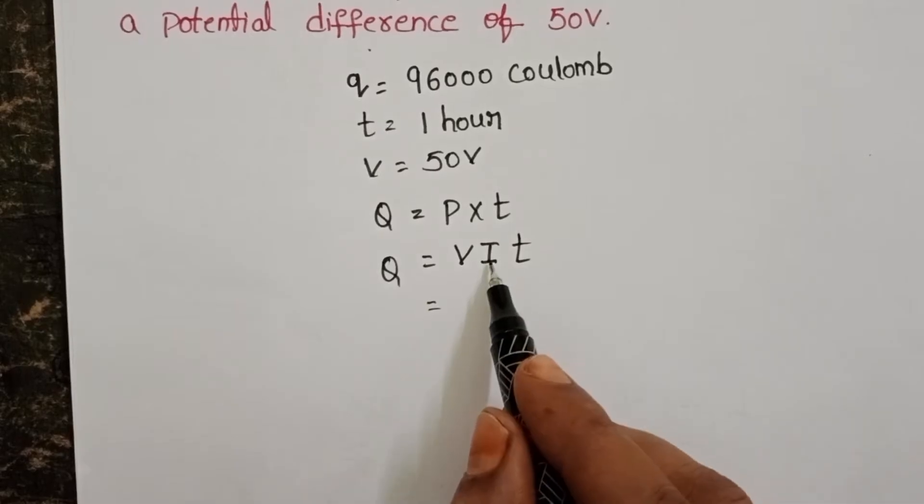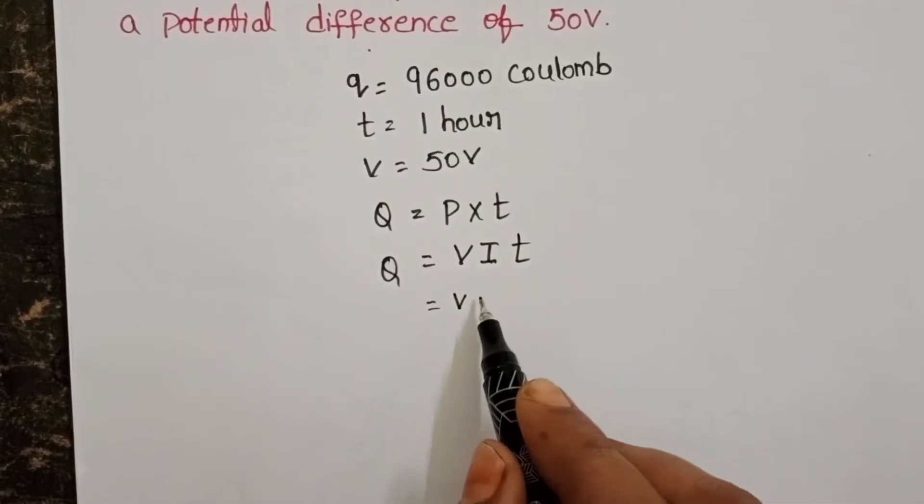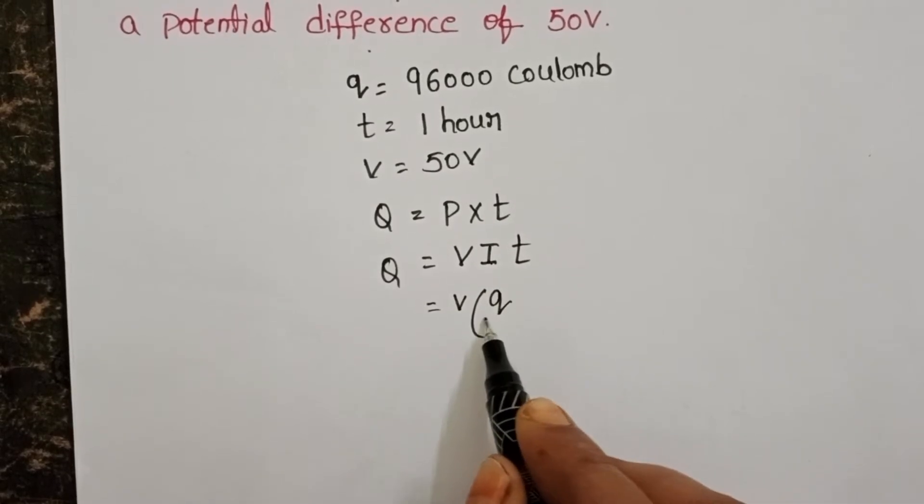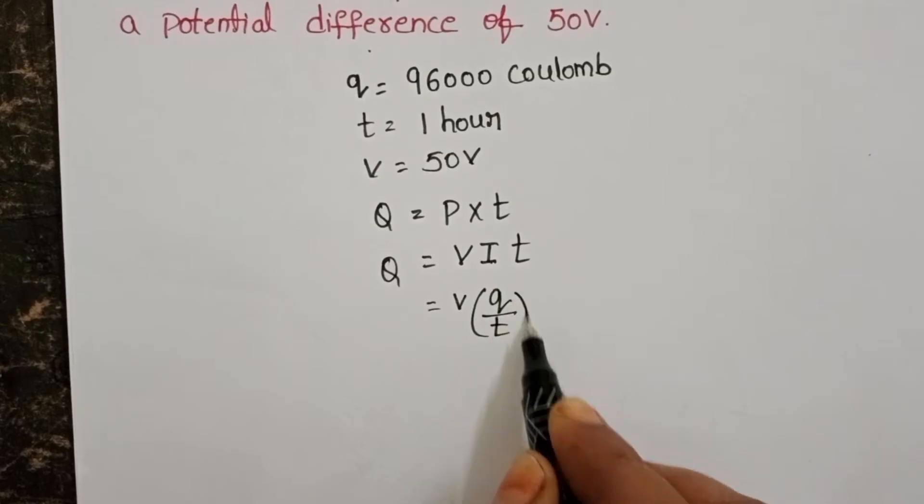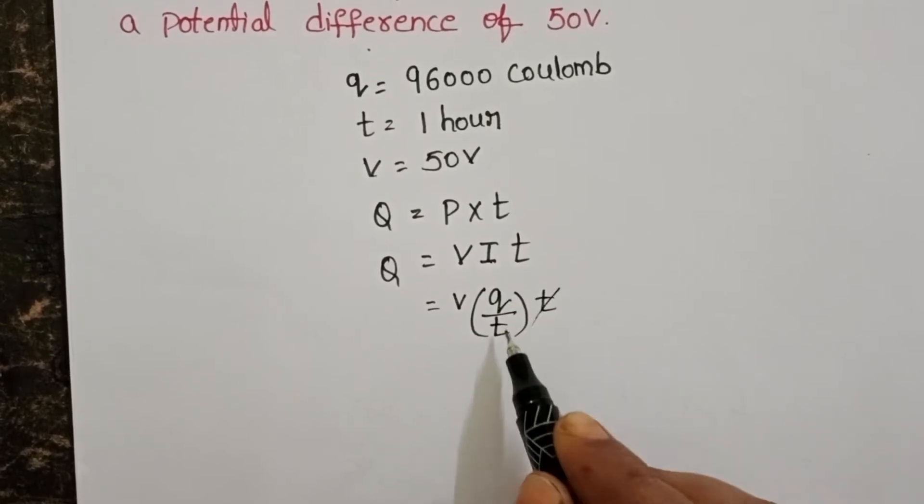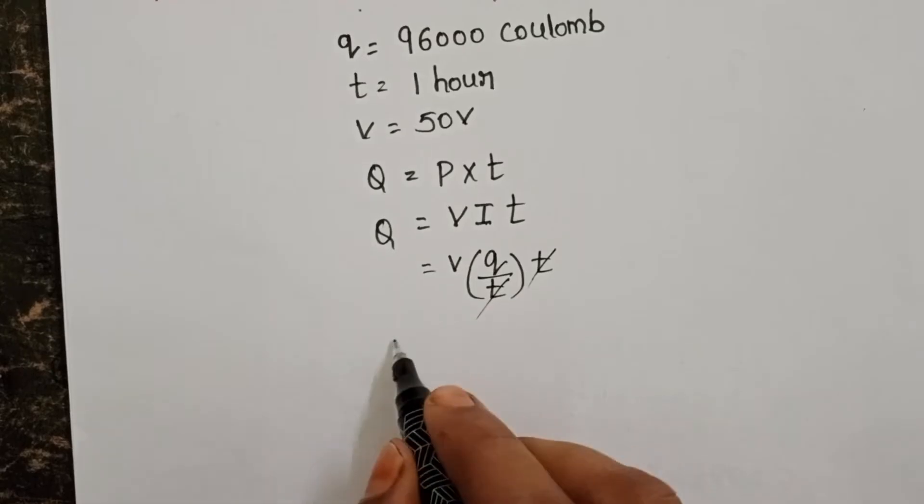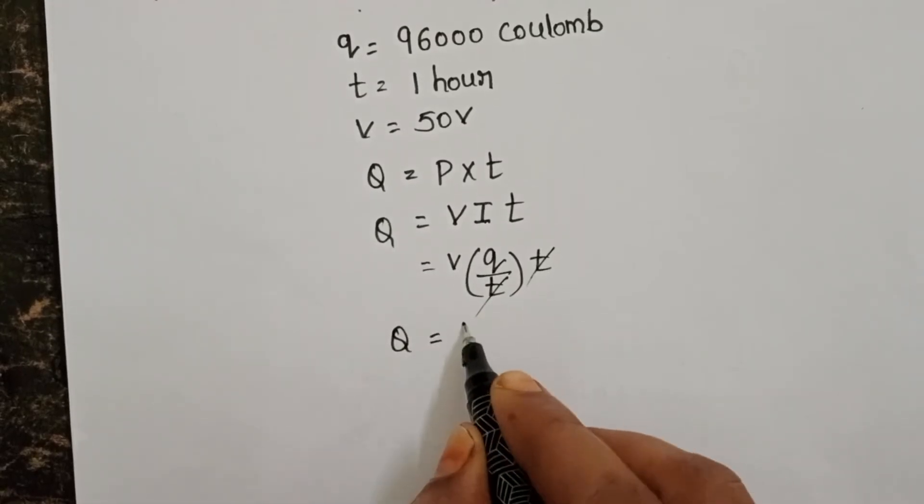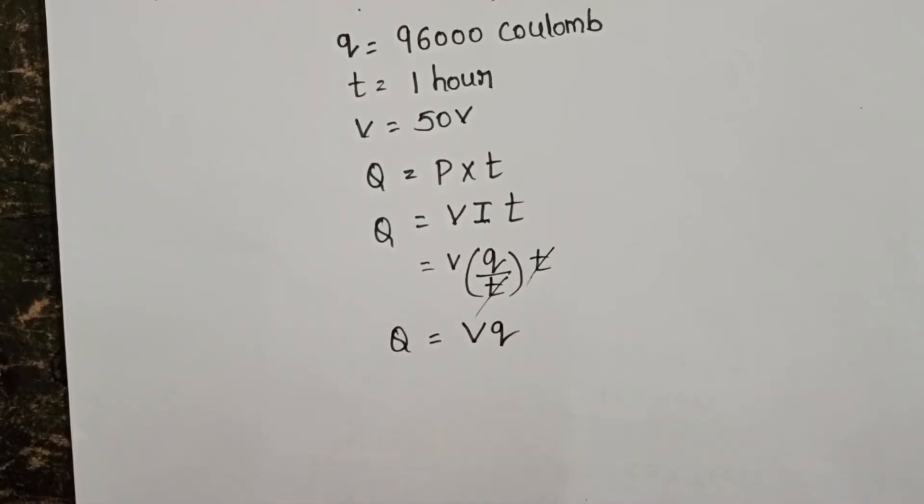Here, electric current is the rate of flow of electric charge, which equals charge divided by time. Time gets cancelled, so finally the formula for heat equals electric potential times charge: Q equals Vq.